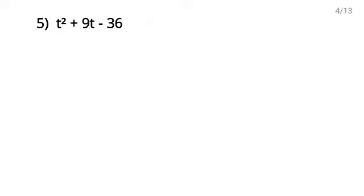Next question, number 5. First of all check the constant term 36. Now this 36 is of minus sign, which means we have to find factors whose product is minus 36. When the constant term is negative, the signs of the two factors will be opposite — one plus and one minus.